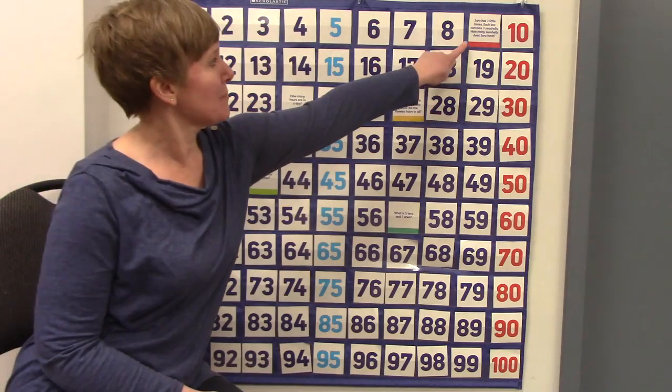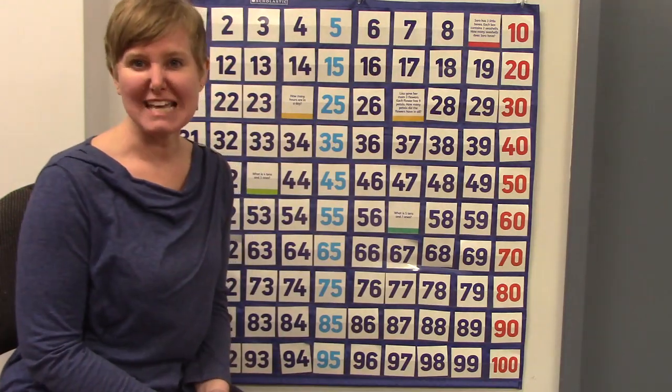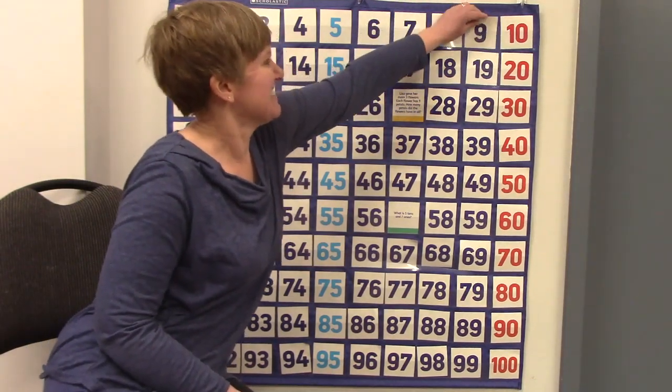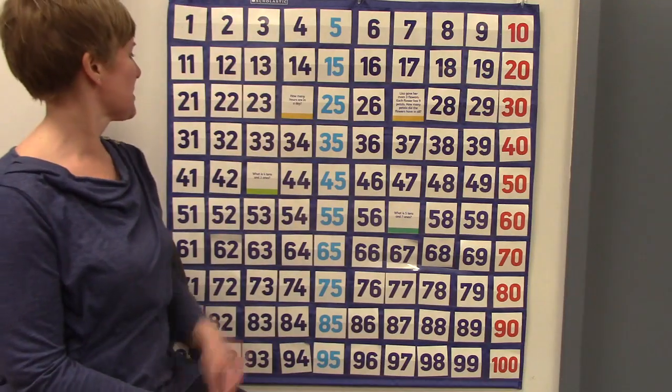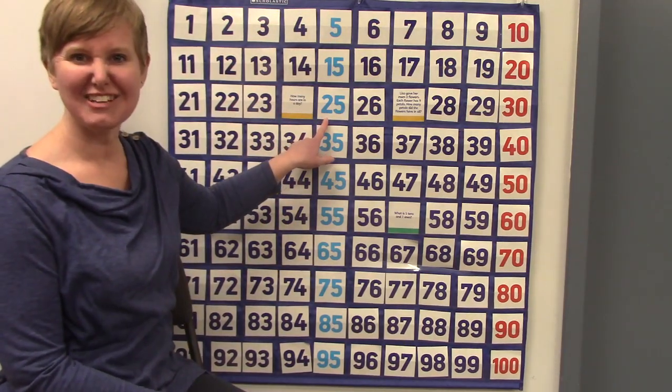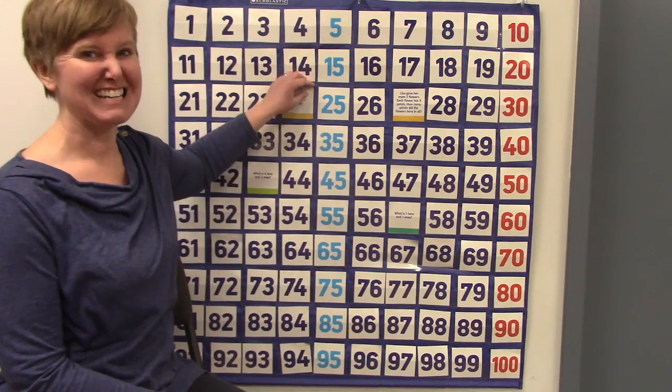There's a number up here between the numbers eight and 10. What is it? It's nine. What about here between 23 and 25? You're right, it's 24.